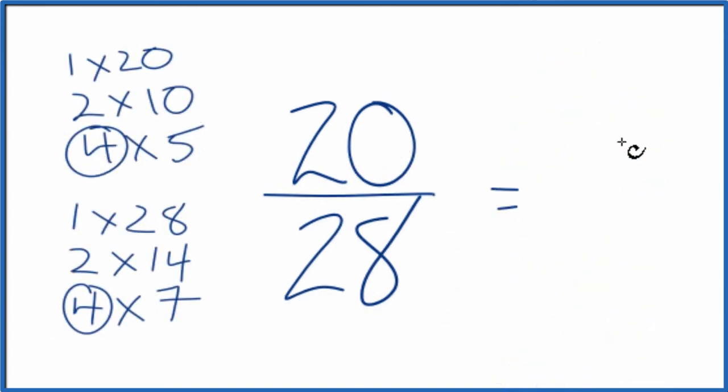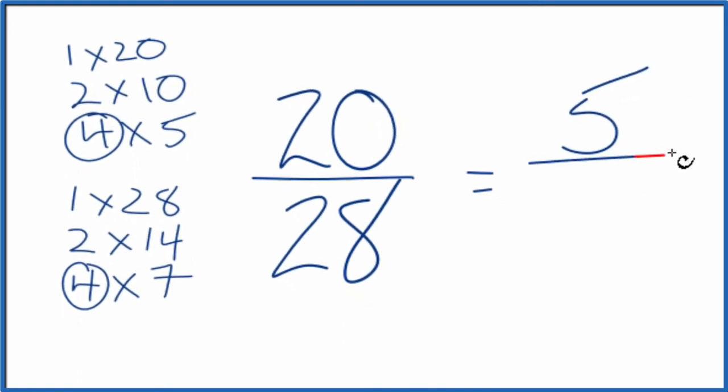That'll give us 5. Then we will divide 28 by 4, which gives us 7. We end up with 5/7. So when we simplify or reduce 20 over 28, we end up with the fraction 5/7.